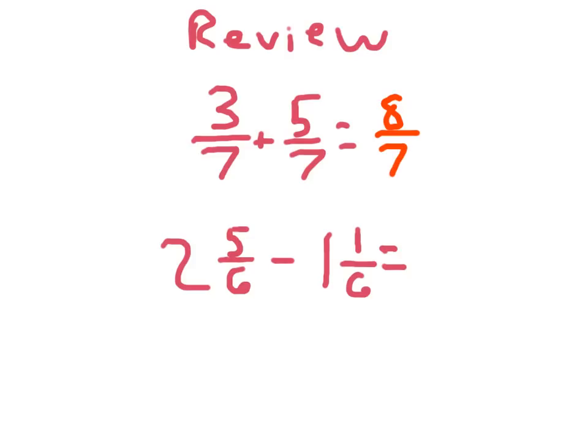because we kept the denominator the same. And we simplify that to one and one-seventh. Now for our other problem here, you'll notice that both of these are mixed numbers, and we are subtracting these mixed numbers. Again, we have five-sixths minus one-sixths, so we already see that we're not going to need a regroup.